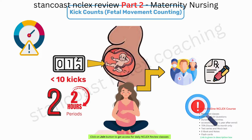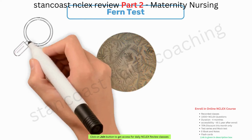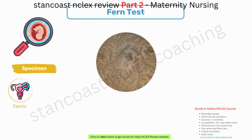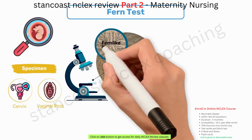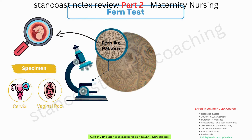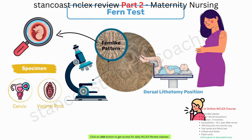The Fern Test serves as a microscopic slide examination to detect amniotic fluid leakage. This entails collecting a specimen from the cervix and vaginal pool, then examining it under a microscope to identify a fern-like pattern indicative of amniotic fluid presence. During this procedure, it is crucial to position the client in the dorsal lithotomy position and instruct her to cough, as this may induce amniotic fluid leakage if the membranes are ruptured.